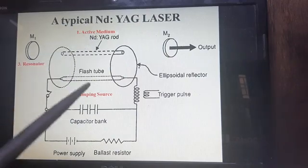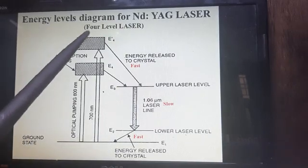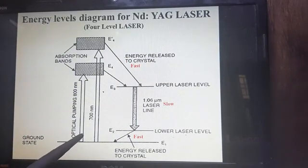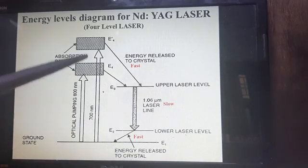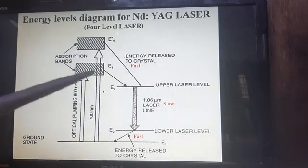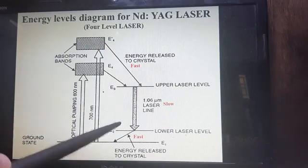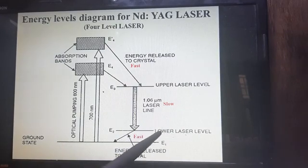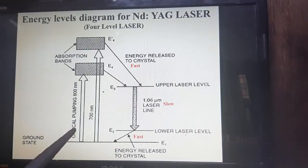This is the energy level diagram for the Nd:YAG laser — it is a four-level laser diagram. We have the ground state E1, the excited state E4, and two intermediate states E2 and E3. E3 is called the metastable state and E2 is the lower laser level state.